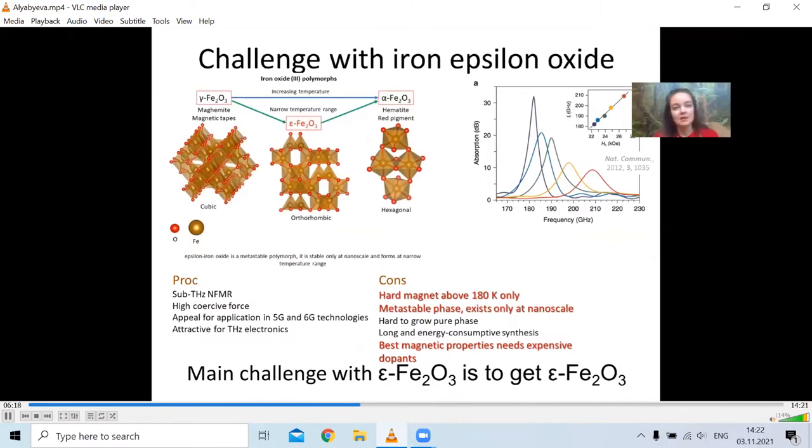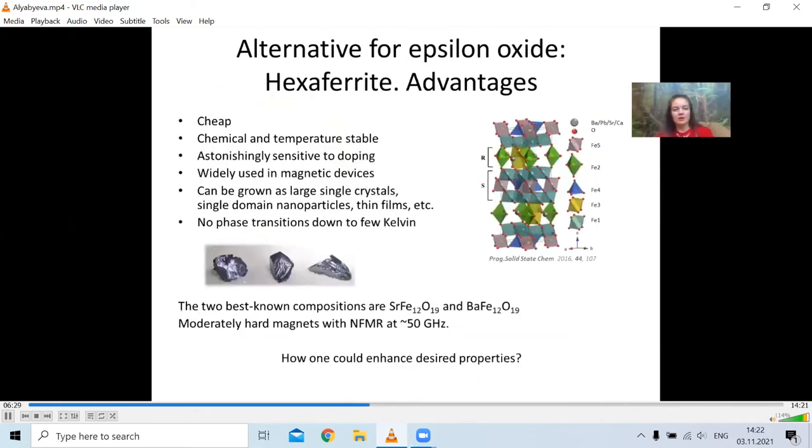And to overcome these difficulties, there is no other way rather than to search for the alternative. And as an alternative, we consider hexagonal ferrite.